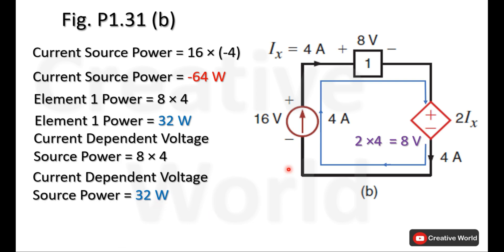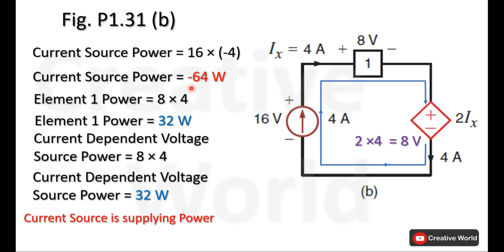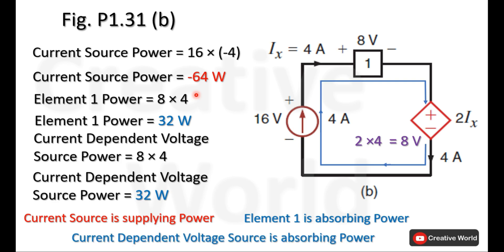Again, justification of these calculations will be done using Tellegen's theorem. The summation of these three powers equals zero — minus 64 plus 32 plus 32 — which shows that the calculations are correct, and Tellegen's theorem justifies them. The current source is supplying power, while element 1 and the current-controlled voltage source are absorbing power.